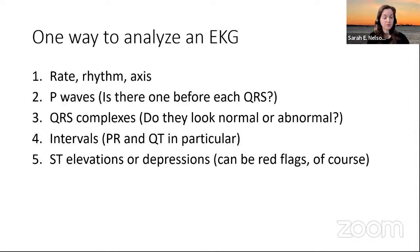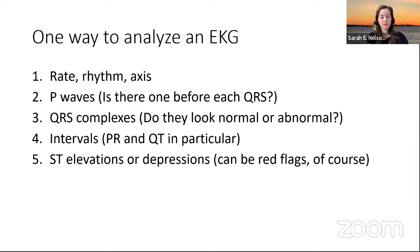Look at the QRS complexes themselves — do they look normal or abnormal? Typically abnormal means it looks wide. If it does, you're thinking along the lines of a left bundle branch block, which can be synonymous with an MI. Large QRS complexes can also tell you that maybe there's an arrhythmia starting from the ventricles.